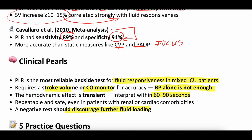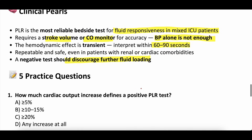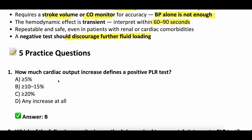Practice question one: how much cardiac output increase defines a positive passive leg raise test? A) more than 5%, B) more than 10 to 15%, C) more than 20%, or D) any increase at all? The answer is B — 10 to 15%. For both stroke volume and cardiac output, you need an increase of 10 to 15% for it to be considered a positive passive leg raise.